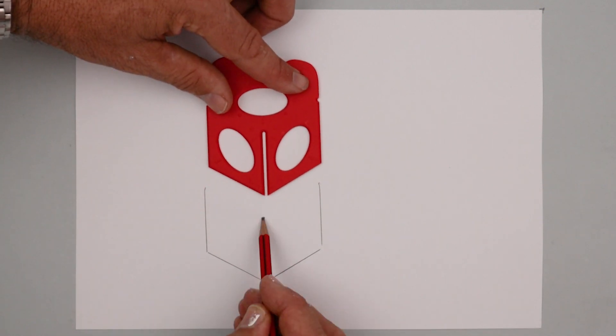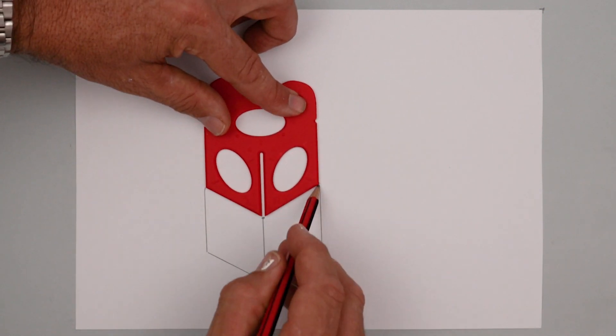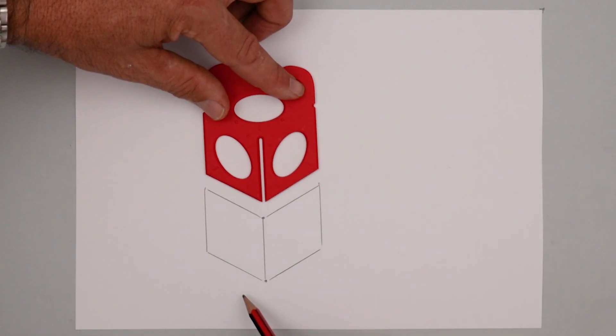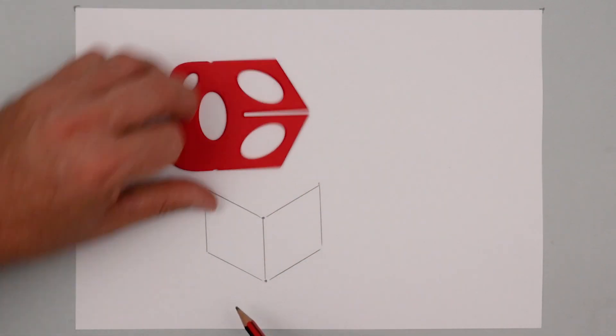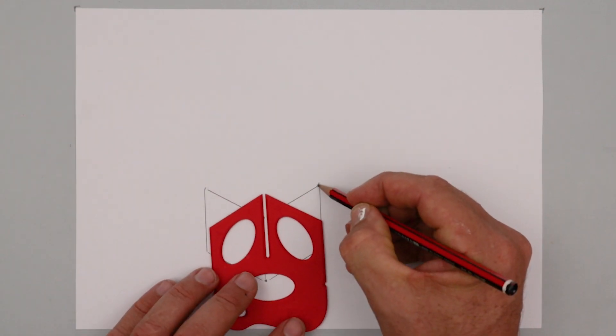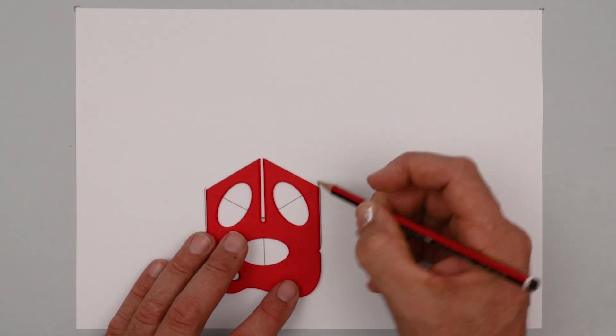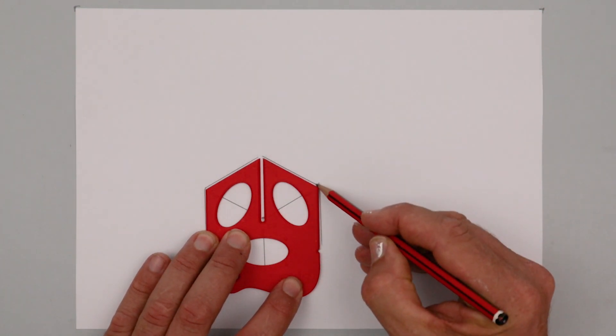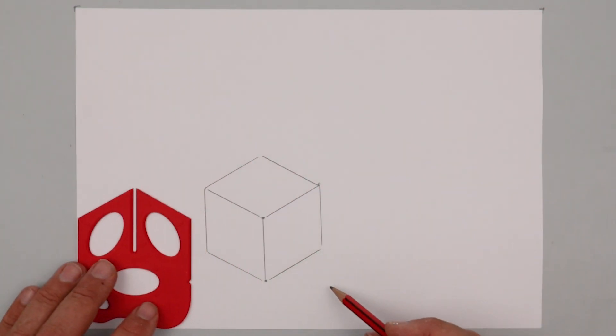Great, now we slide it upwards and draw two more lines at the top. Awesome, now we rotate it around, line up the corner as you see there and draw in two more lines to finish, so that's the same three steps to draw a cube.